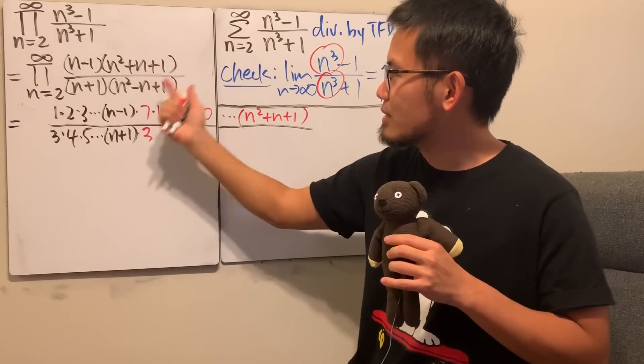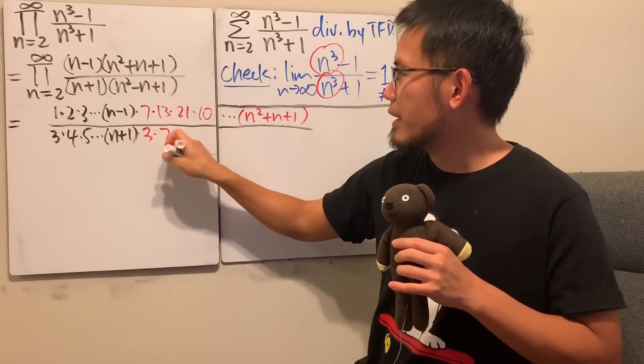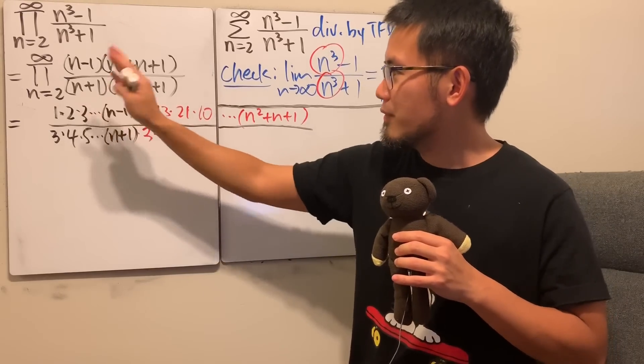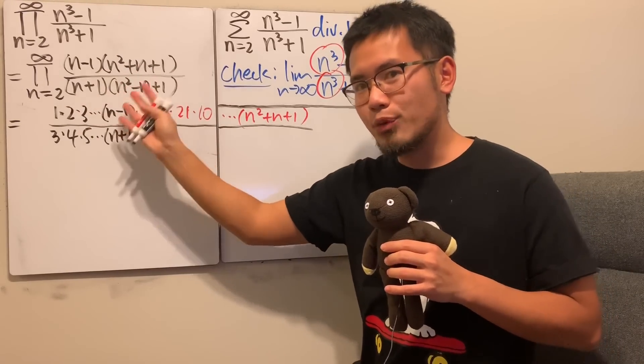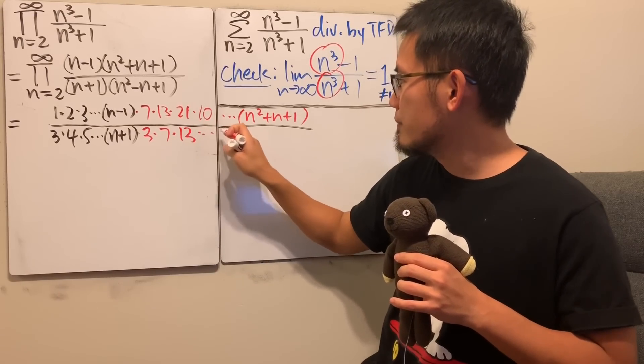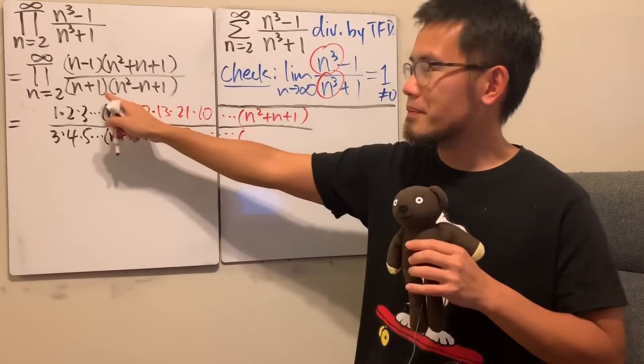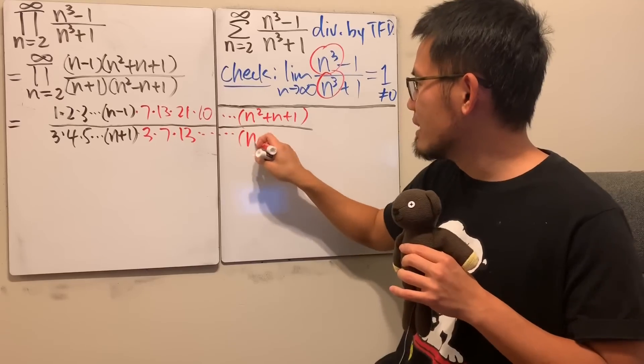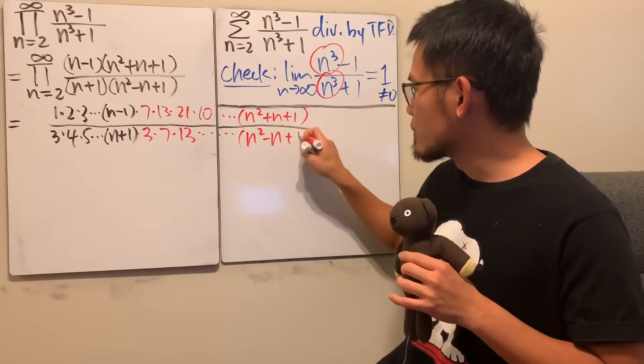And then plug in 4 is 16, minus 4 is 12, plus that is 13. And you actually see this right here, it's actually very nice. Lastly, you see, you have n squared minus n plus 1, like that.